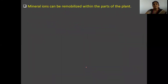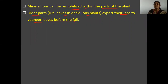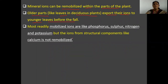Mineral ions are re-mobilized within the parts of the plant. In deciduous plants, older leaves export their ions to younger leaves before leaf fall. The most readily mobilized ions are phosphorus, sulfur, nitrogen, and potassium. However, ions from structural components like calcium are not re-mobilized.